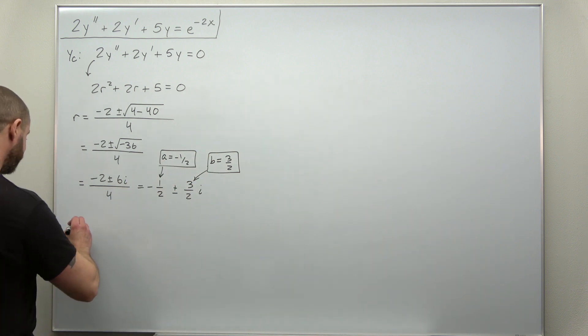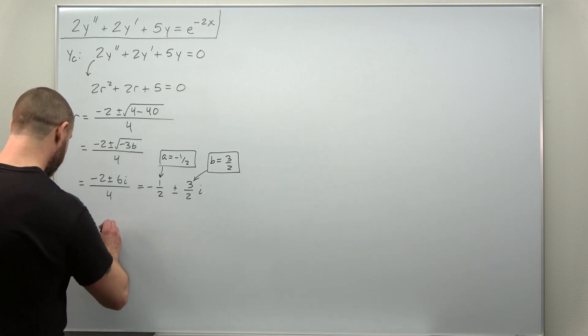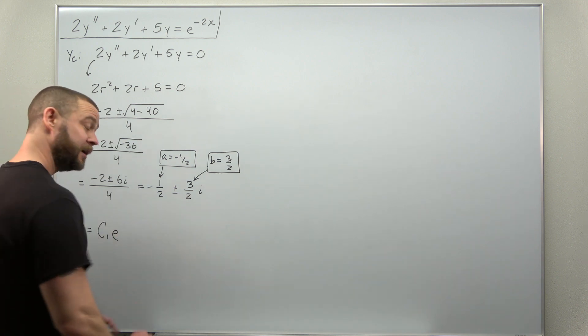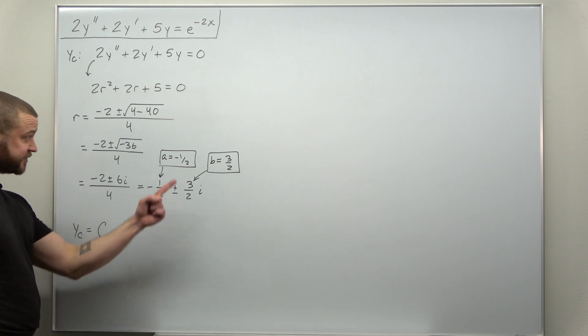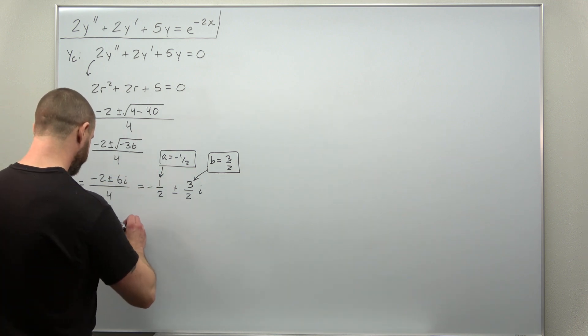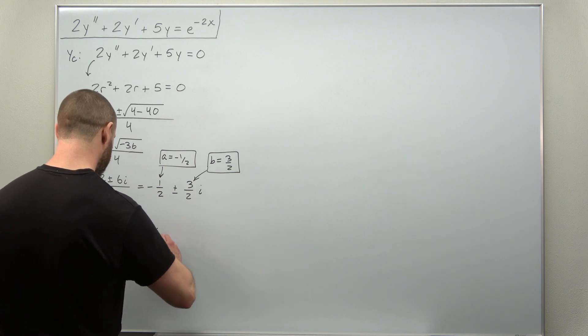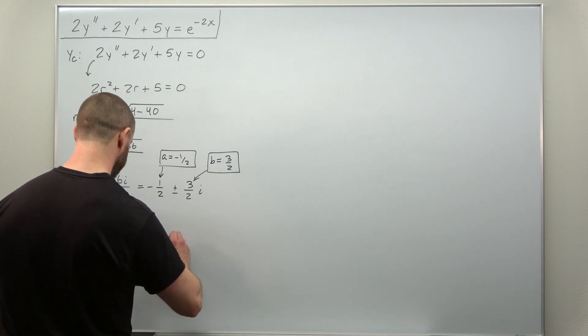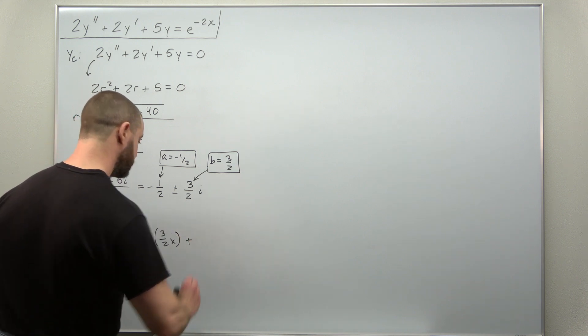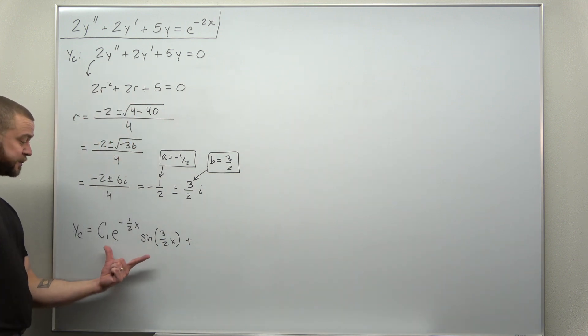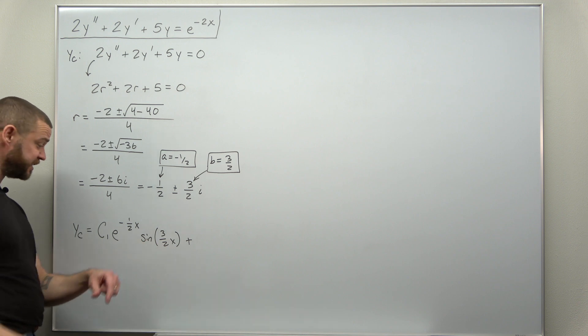Your complementary solution in this case of complex characteristic roots looks like a constant times e to the ax, where a is negative 1 half, but now times sine of bx.